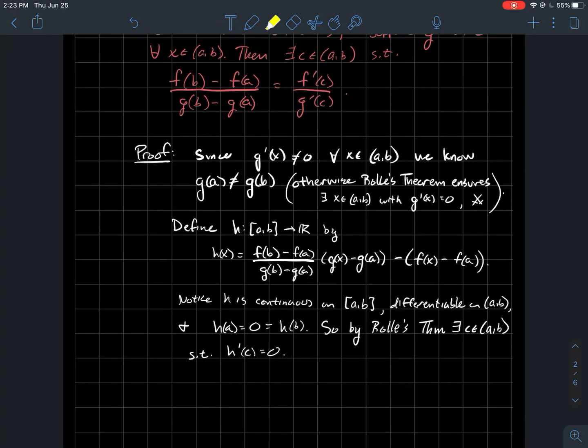So by Rolle's theorem, there should exist some point where the derivative of this function h is equal to zero. The next thing we want to do is look at this formula for this function h. Remember, x is the variable. So what's the derivative of h look like? In other words, what is h prime?